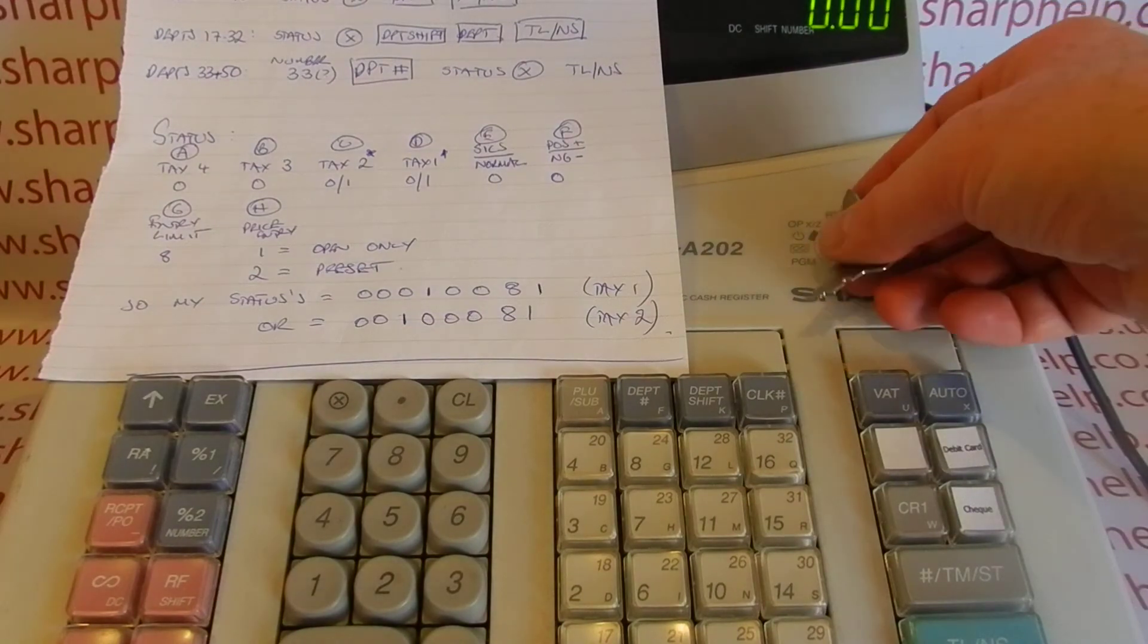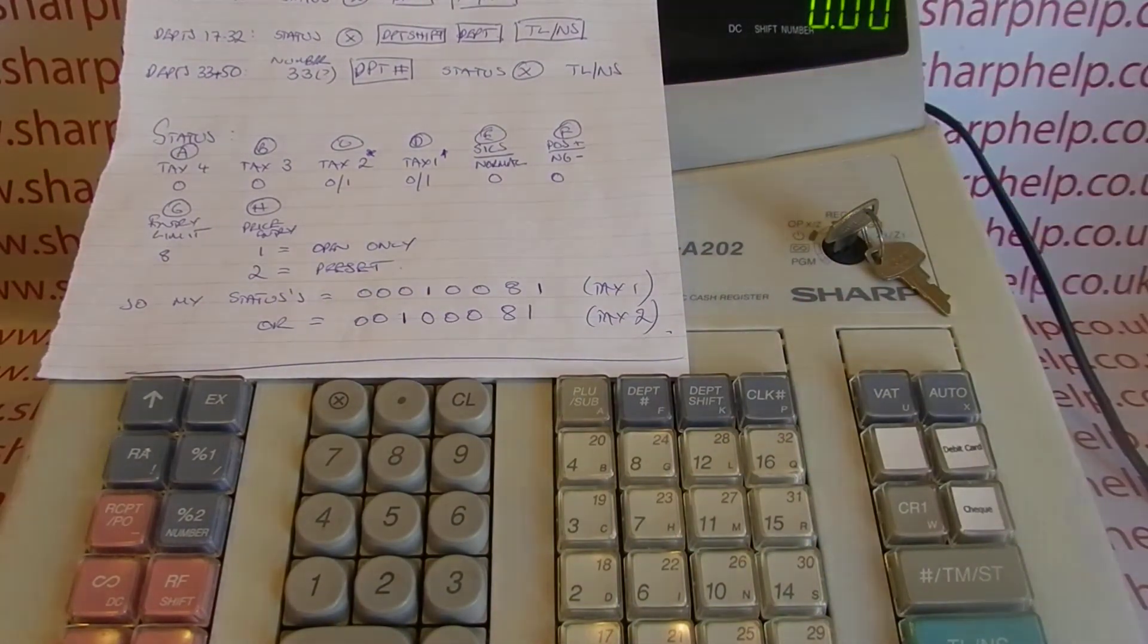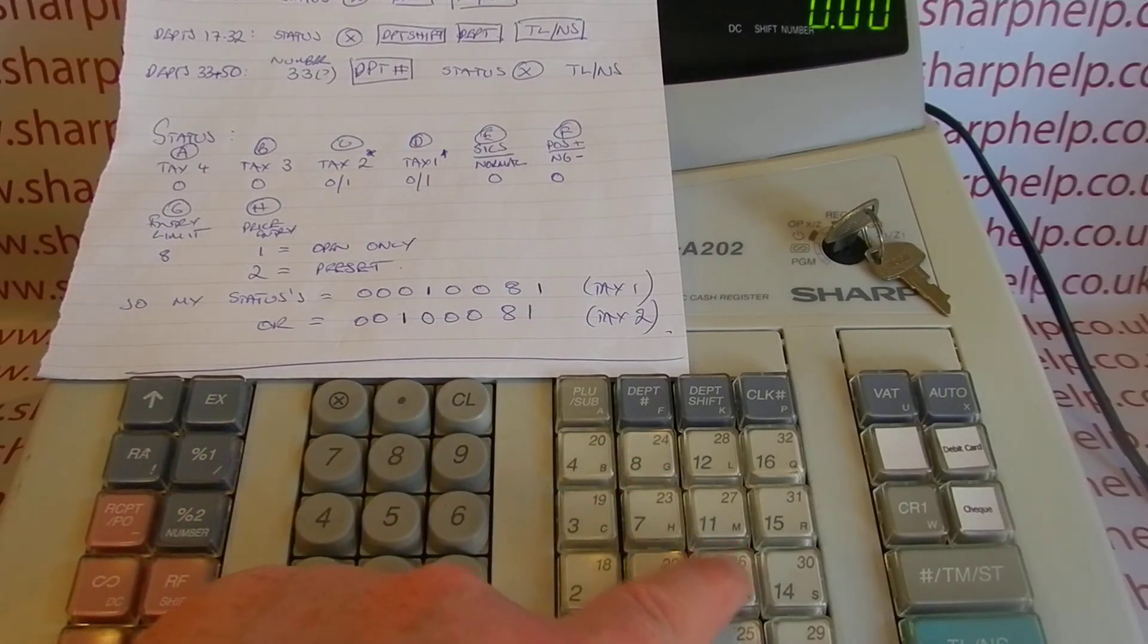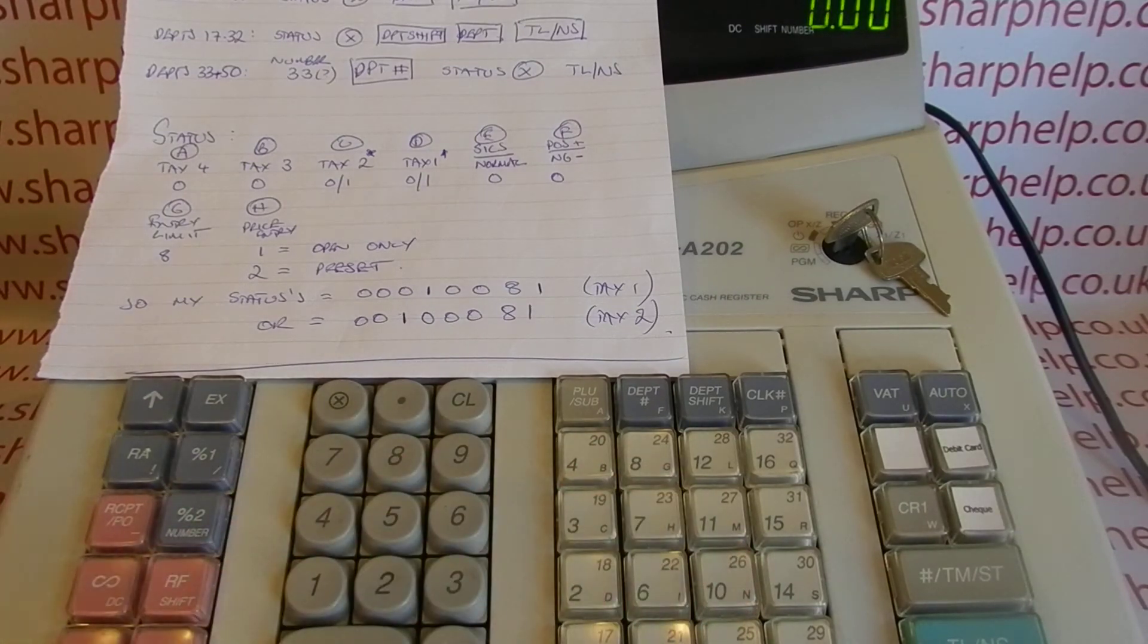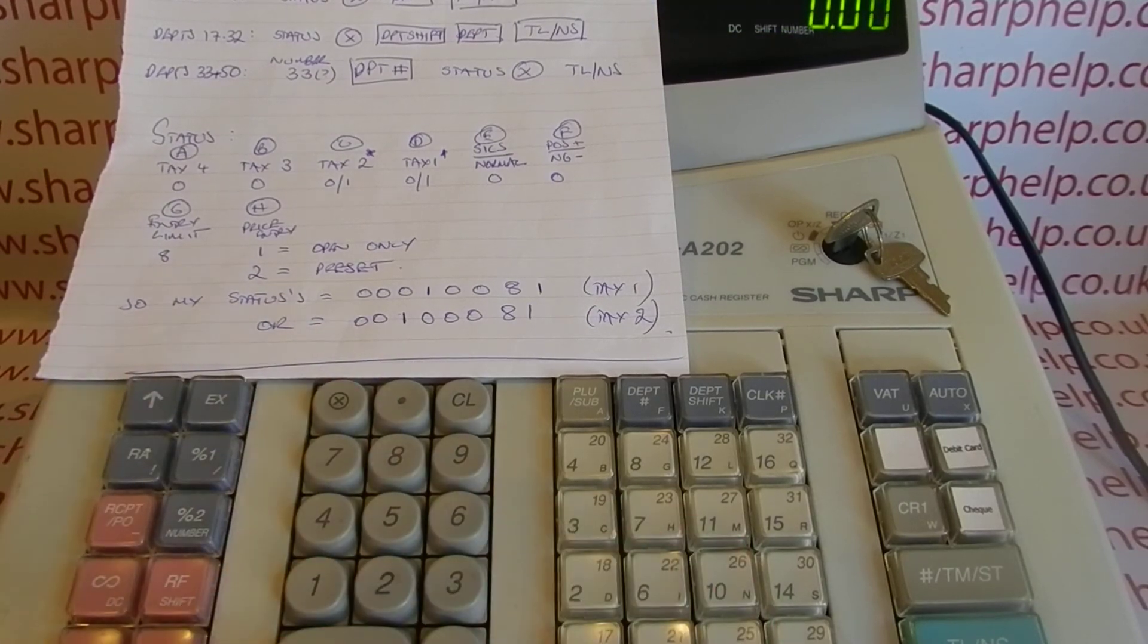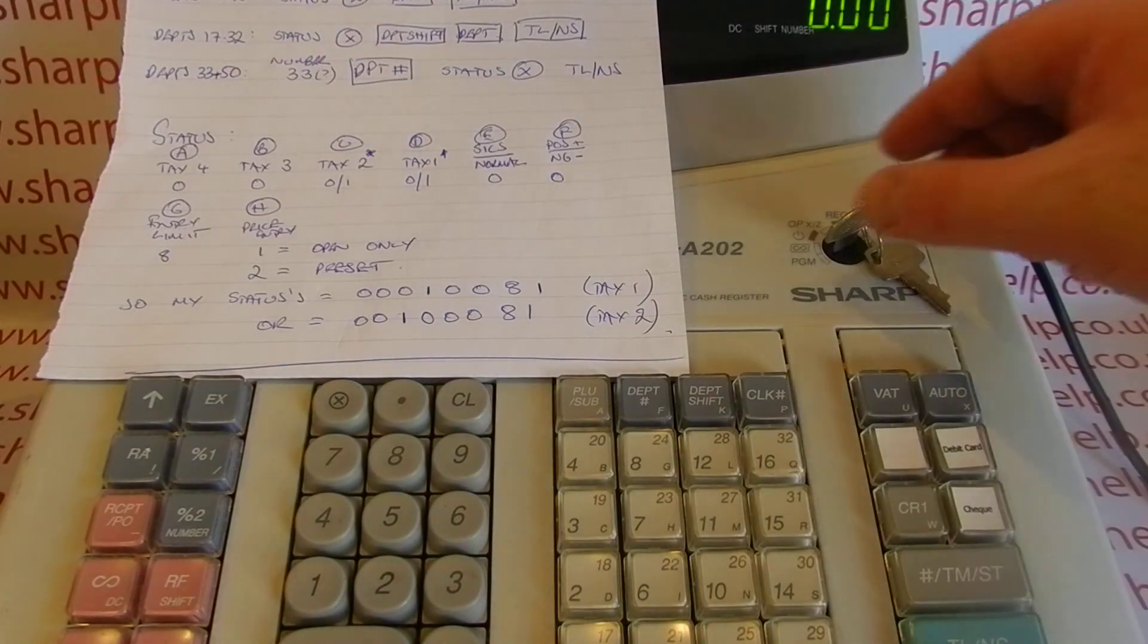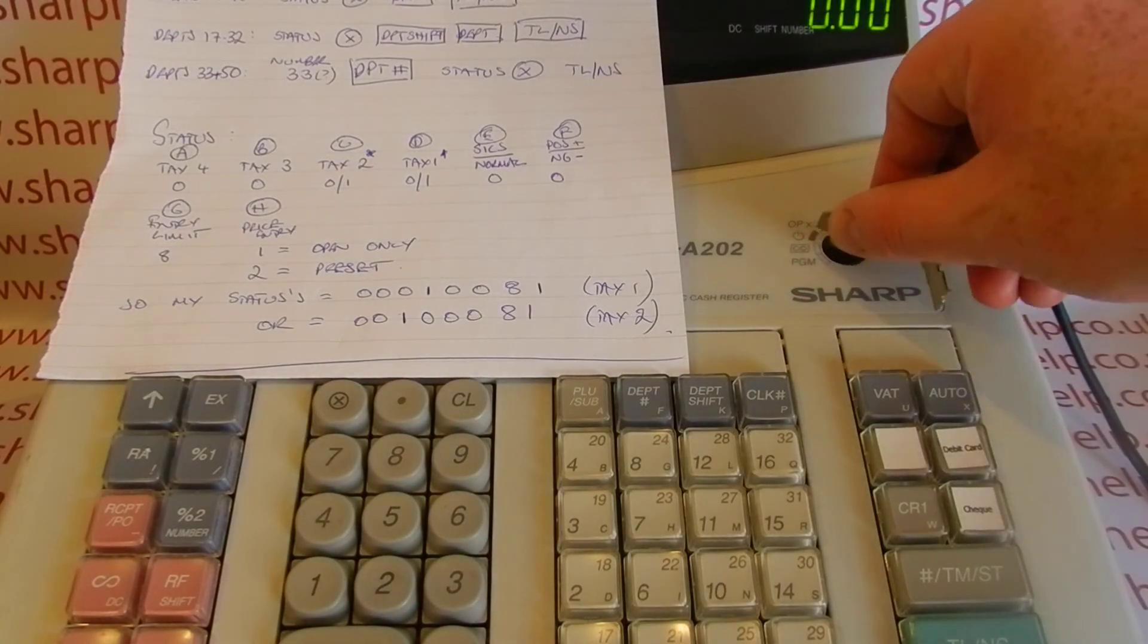In fact, I'll quickly show you how to do that. If we go back to PGM, we'll use department 10, and we're going to have this say our bread department, so there's no tax applied to it. 0, 0, 0, 0, 0, 0, 8, 1, multiply, department 10, TL/NS. I appreciate I went quite fast then, but obviously you can pause it and rewatch it.